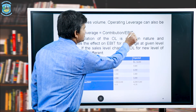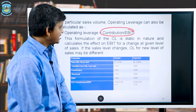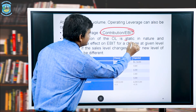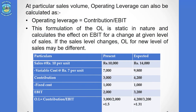There is another formula for calculating operating leverage: contribution divided by EBIT. This formula is static in nature — it calculates the effect on EBIT for a change at a given level of sales, so different levels of sales give different operating leverages. At sales of 10,000 with contribution 3,000, fixed cost 1,000, EBIT 2,000: OL = 3,000 ÷ 2,000 = 1.5. At sales of 14,000: OL = 4,200 ÷ 3,200 = 1.31.